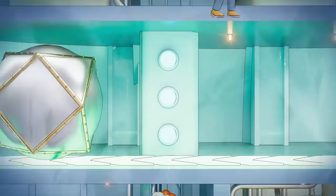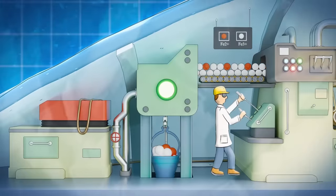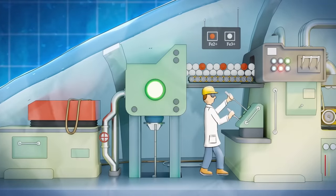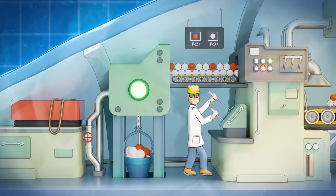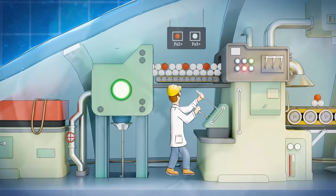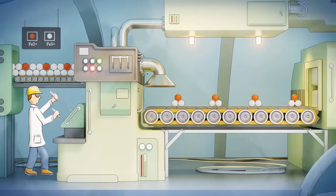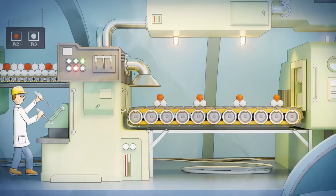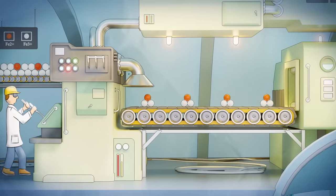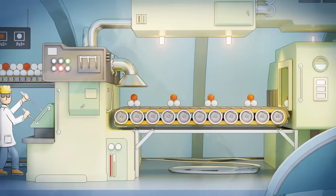First, the iron goes through a regulator. Iron comes in two chemical flavors, called Fe2 and Fe3. A specific ratio of the two is required. So this machine electronically converts the iron to proportions of 2 Fe3 for every one Fe2. Now, a major problem has to be addressed.